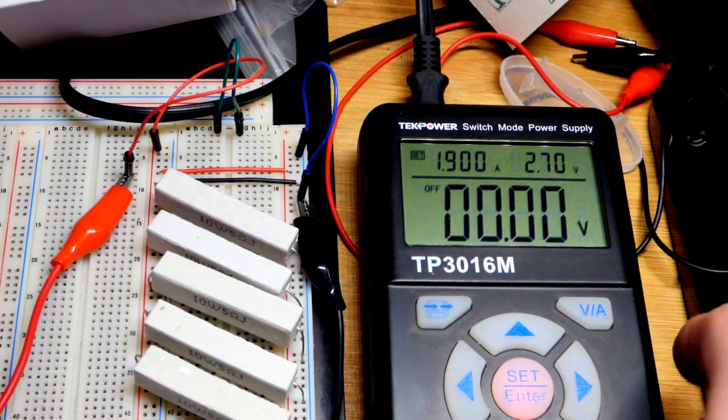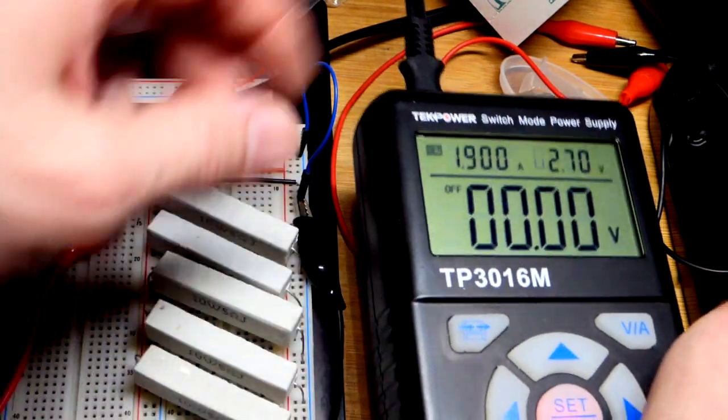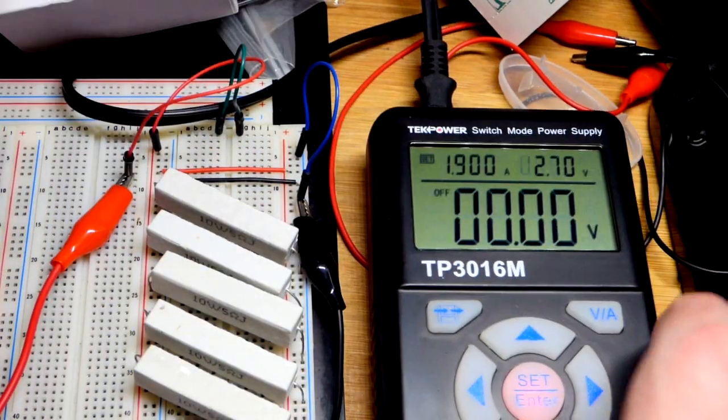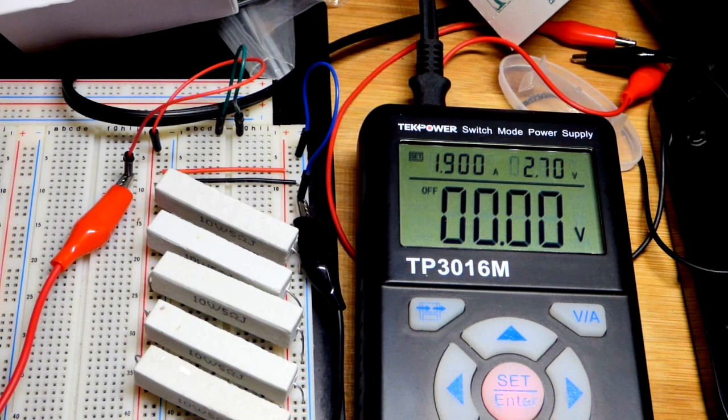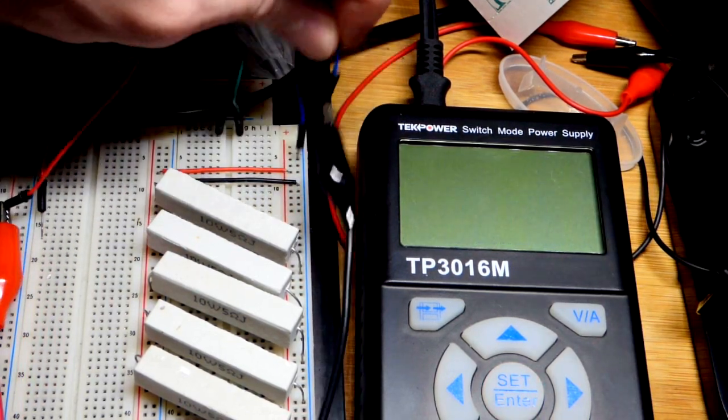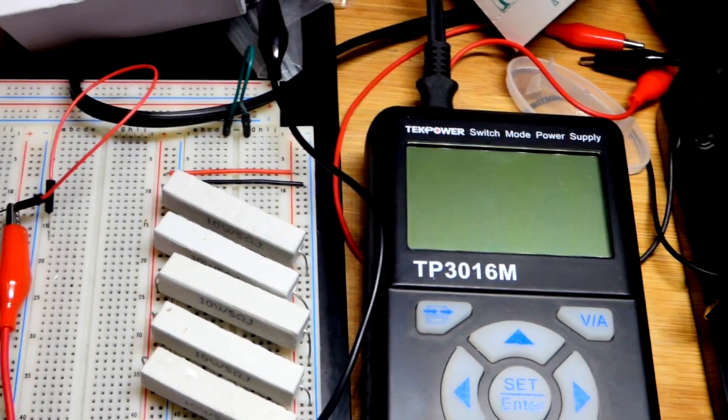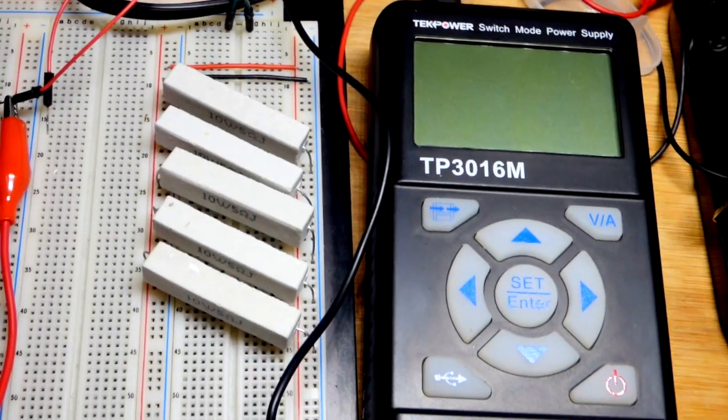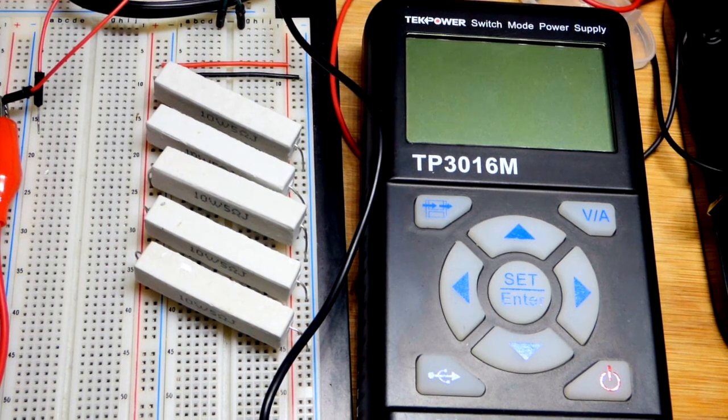So I'm going to turn the power supply off here. And we can just leave it there. I'll unplug it so it's off. And then unplug this from the board. Let the resistors cool down a little bit. So we're going to get the multimeter really quick and see what resistance we have. So it should be about 1 ohm of resistance.